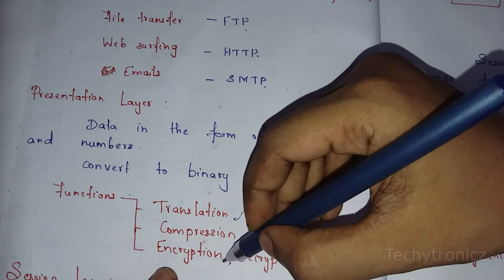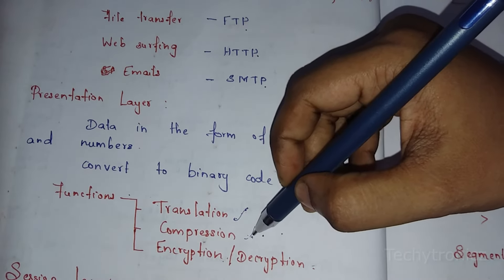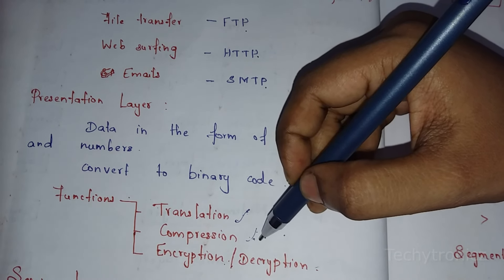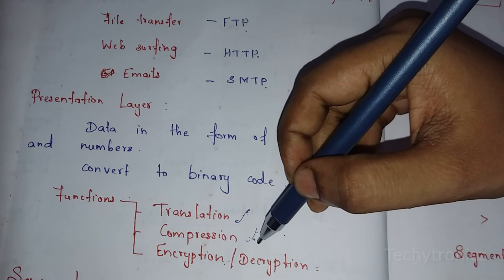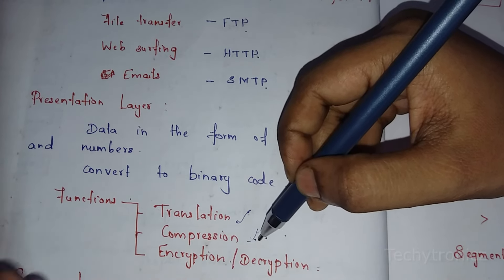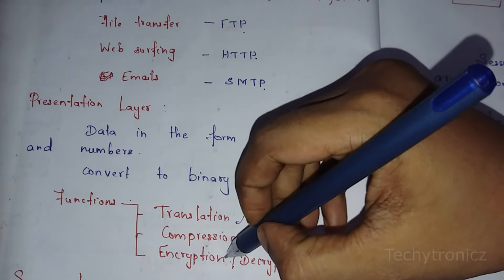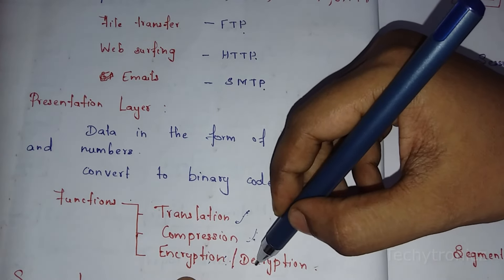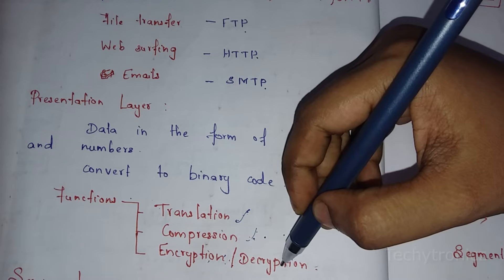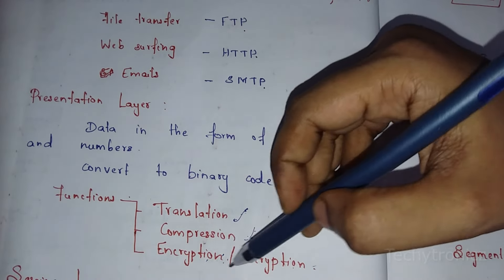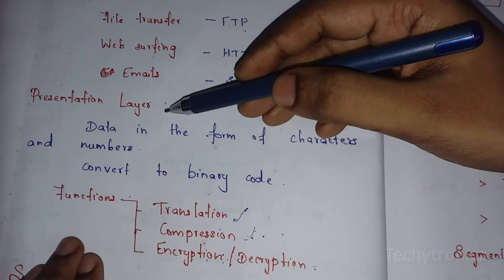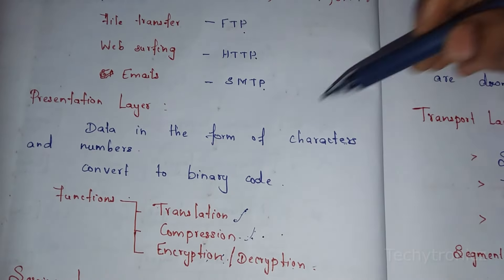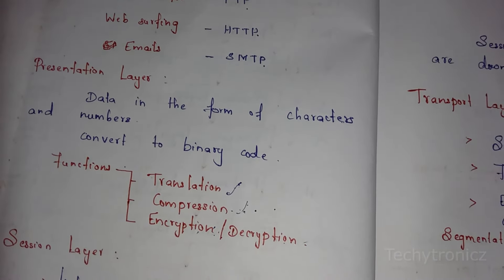Then the next function is encryption. In the compressed data, when transmitted over the network, someone may try to steal or hack it, so the actual data is encrypted. Then on the receiver side, the original data is decrypted. So the functions of the presentation layer are: translation, compression, and encryption or decryption.